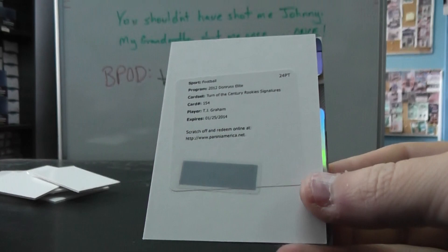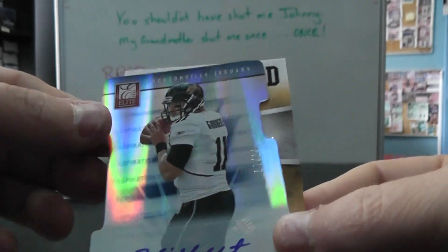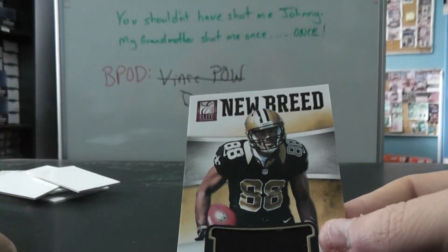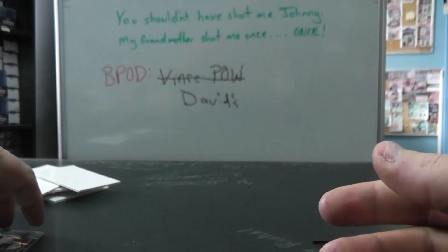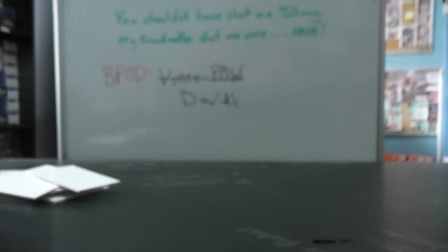All right. We have Patrick Willis, die cut, numbered to 52. TJ Graham autograph. Devon Still. Blaine Gabbert, numbered to 20. Only 20 of those, die cut autograph. And Nicktoon jersey. George Pease, that'll do it. I'll get it on the way today. See ya.